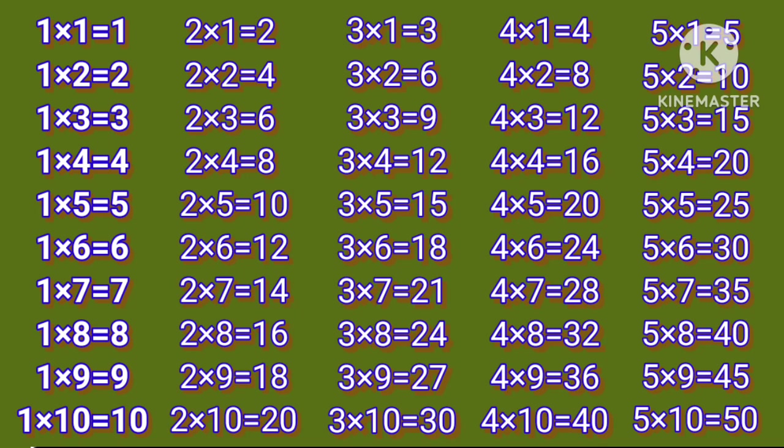2 1s are 2. 2 2s are 4. 2 3s are 6. 2 4s are 8. 2 5s are 10. 2 6s are 12. 2 7s are 14. 2 8s are 16. 2 9s are 18. 2 10s are 20.